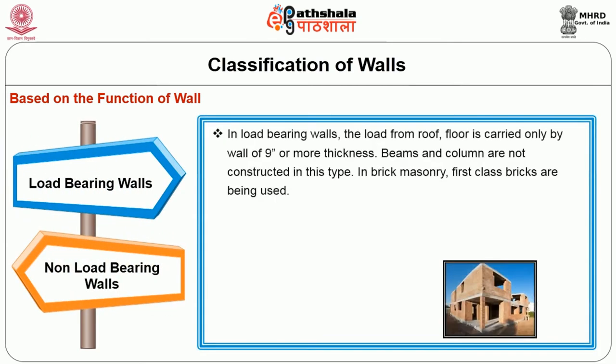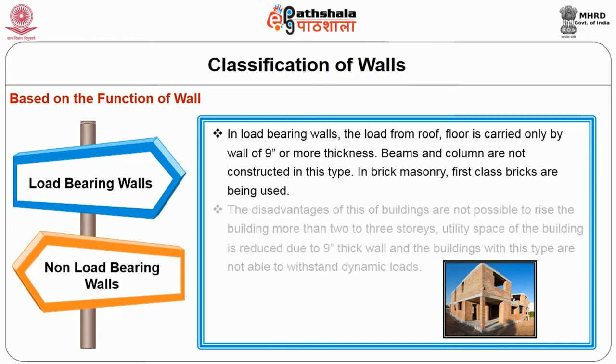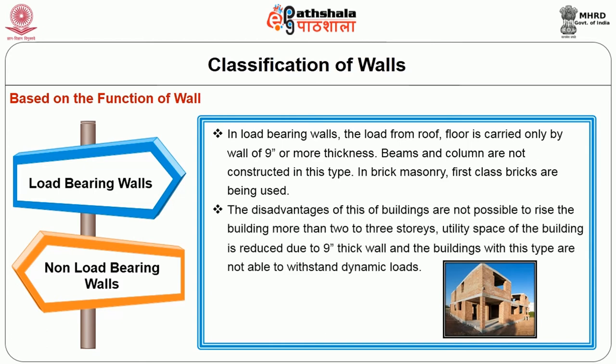In load-bearing walls, the load from roof and floor is carried only by the wall, which is 9 inches or more in thickness. Beams and columns are not constructed in this type. First-class bricks are used in brick masonry. The disadvantages are that the building cannot rise more than 2 to 3 storeys, utility space is reduced due to the 9-inch thick wall, and the building is unable to withstand dynamic loads.